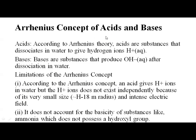First is the Arrhenius concept of acids and bases. According to Arrhenius theory, acids are substances that dissociate in water to give hydrogen ions (H⁺). This constraint is very important — only in water do they dissociate. Bases are substances that produce OH⁻ ions after dissociation in water. So the constraint Arrhenius used is: only in aqueous solution, if a substance gives H⁺ ions, it is an acid; if it gives OH⁻ ions, it is a base.